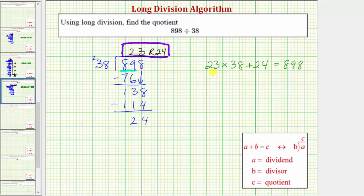We simplify the left side. 23 times 38 equals 874. And 874 plus 24 does equal 898.